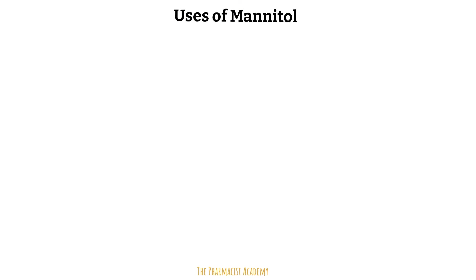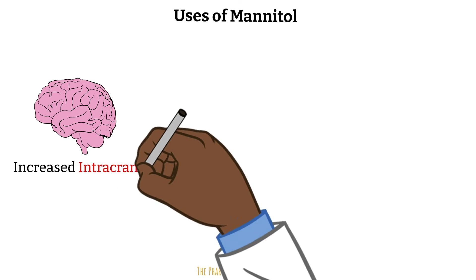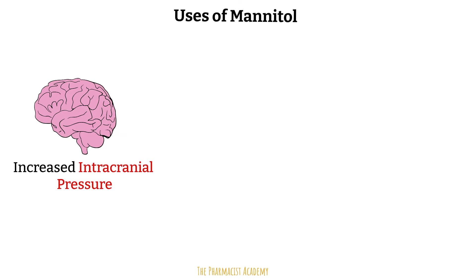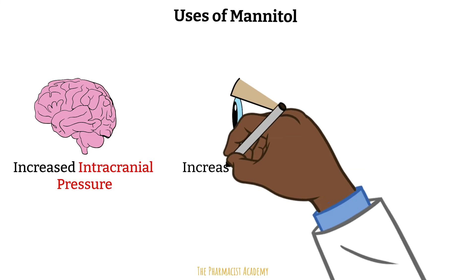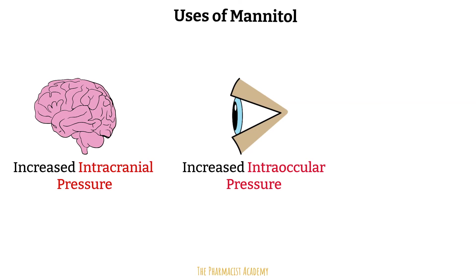Other important uses of mannitol include patients with increased intracranial pressure. When administered intravenously, mannitol increases the osmolarity of the plasma. Since mannitol cannot cross the blood-brain barrier, the increased osmolarity draws water out of the brain into the intravascular space, where it travels with mannitol to the kidneys and gets excreted in the urine. When mannitol is used for increased intraocular pressure, the mechanism is the same — it draws water out of the vitreous humor of the eye into the intravascular space for excretion.